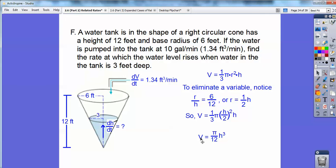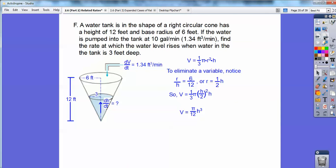So I'm going to get DV equals, the 3 is going to come down. 3 pi over 12 H squared, which is pi over 4 H squared dH.